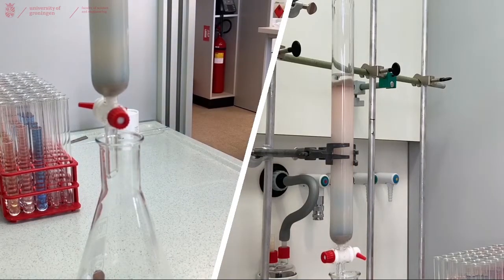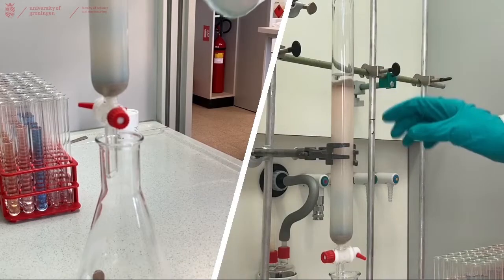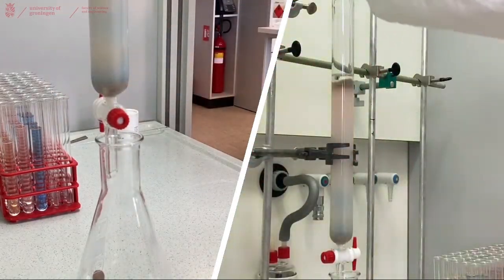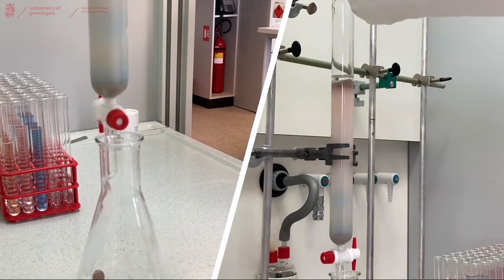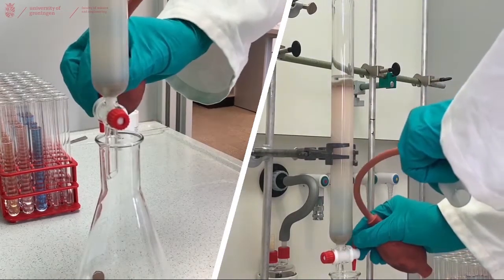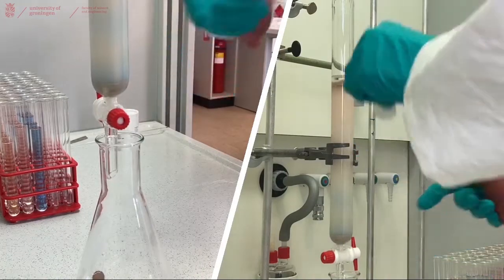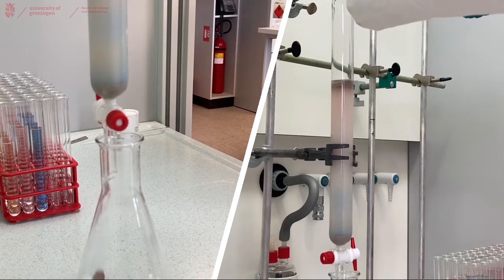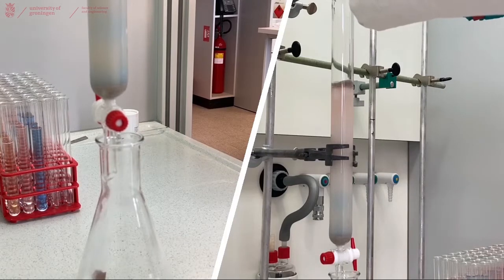When you're sure that you have your product isolated in your flask, you can empty the column by opening the tap and pushing out the liquid using the balloon. Make sure that you collect this liquid in an Erlenmeyer for the one case that you actually did not isolate your product yet.